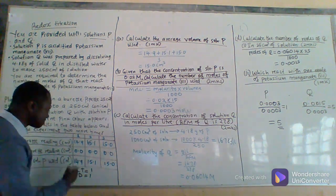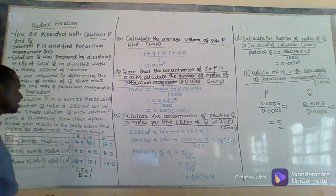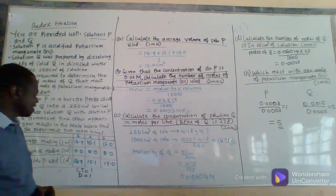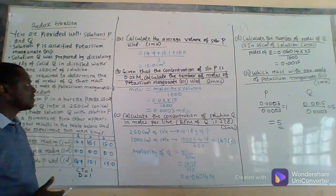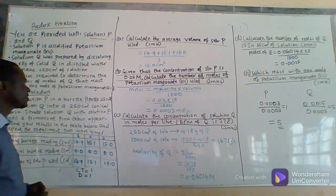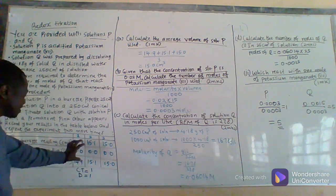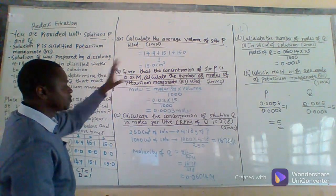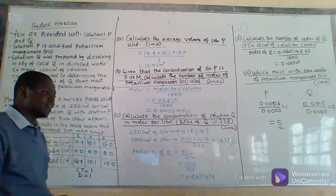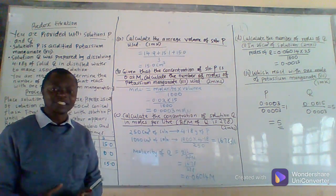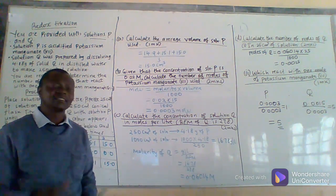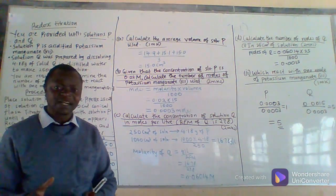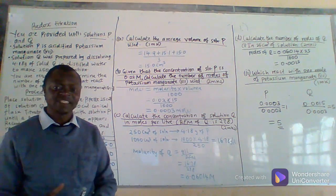There is a mark for decimal places. There is a mark for the principle of averaging. Normally, the first question that is always asked after completing the table is to calculate the average volume of solution used. To calculate the average volume — that is where the mark for the principle of averaging lies — you must average all the values that are within the range of plus or minus 0.2.